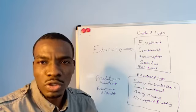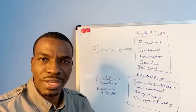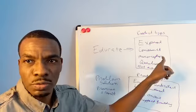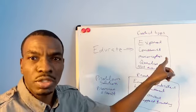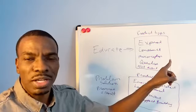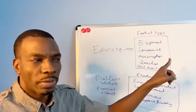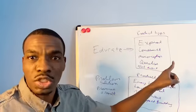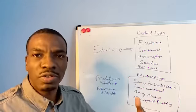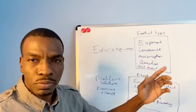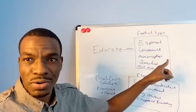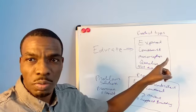So product type number one. If any of this stuff explains your specific product — in this first box — then I'm going to tell you what type of content you should be creating. The first thing is if your product type is expensive. Expensive — I know that could be a relative term — let's just say if it's a couple of hundred dollars or more, then I would put it in this specific category.